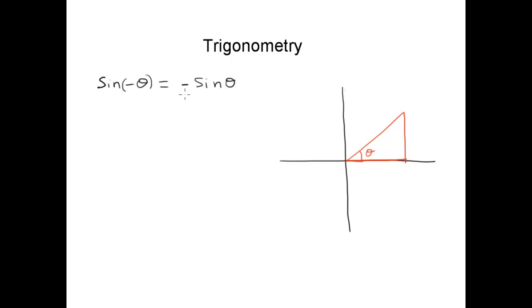Meaning if I have sine minus 60 degrees, that would be minus sine 60, which is minus root 3 over 2. Because sine 60 is root 3 over 2, so minus times root 3 over 2 is minus root 3 over 2.